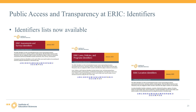Another way we are improving access and transparency is by making the complete identifier list publicly available. It has been a while since the complete lists were made available to the public, and we are excited to share them with you. This will allow you to locate a specific identifier to use in your search. Each list is presented alphabetically in a PDF so you can search for a specific identifier or browse. You can find these lists on the main thesaurus page below the thesaurus subject categories.